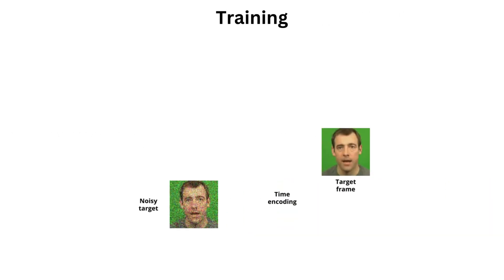During training, we randomly pick a target frame. Following the diffusion models pipeline, we sample a time step and add noise to the target frame, creating its noisy version. The goal of the diffusion model is to predict the target frame given the noisy one and time encoding.